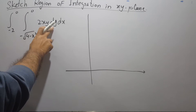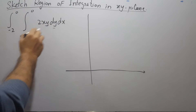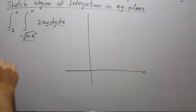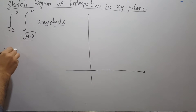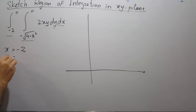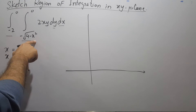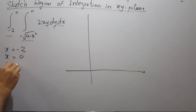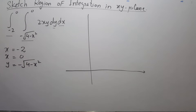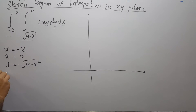Since the first differential is DY, these limits are for Y, and the second is DX, so these are the limits of X. The lower limit of X is x = -2 and the upper limit is x = 0. The lower limit of Y is y = -√(4 - x²), meaning we take only the negative side of Y, and the upper limit is y = 0.